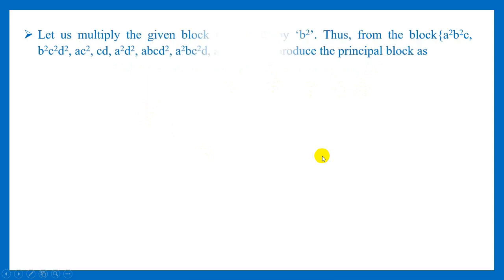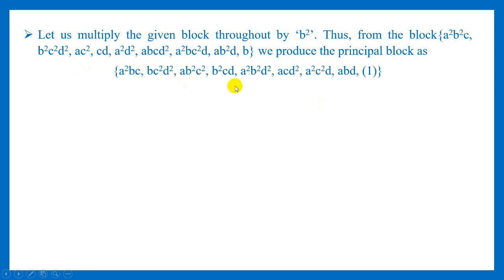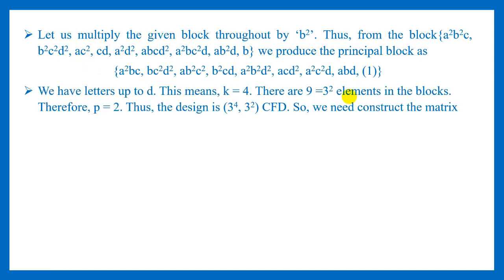In order to make this block a principal block, all we have to do is multiply this block by B squared. So we multiply B squared into the given block — A²B²C, B²C²D², AC², B — and this gives us our principal block: A²B²C × B² = A²BC; B²C²D² × B² = BC²D; AC² × B² = AB²C²; and B × B² = 1. Now we have found our principal block with treatment combinations involving letters up to D.